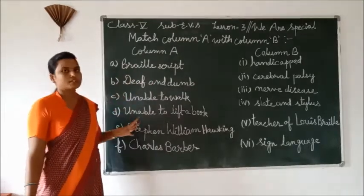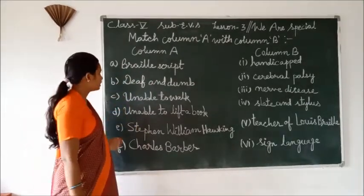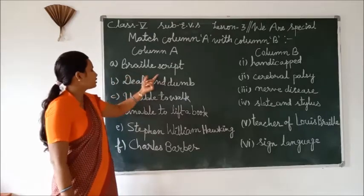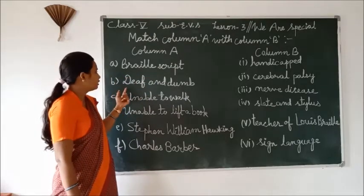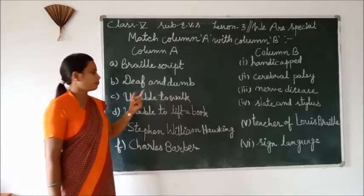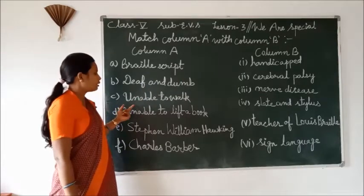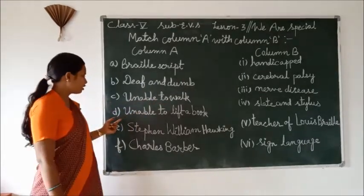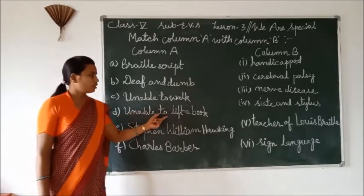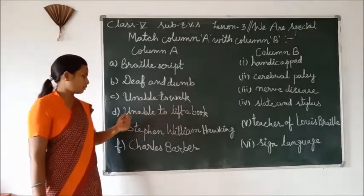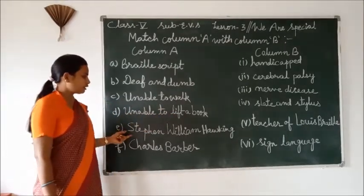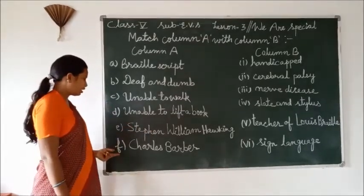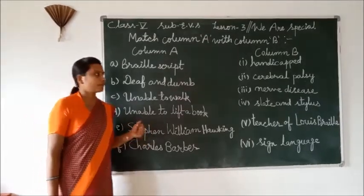Match column A with column B. First, I read column A. A: Brain scream. B: Deep and down. C: Unable to walk. D: Unable to lift a book. E: Stephen William Hawking. F: Charles Barber.